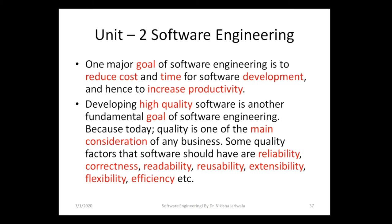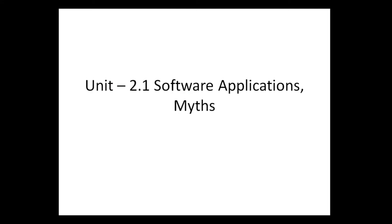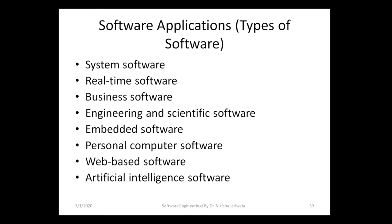In Unit 2 we have some topics. First we saw some general things related to software engineering, and after that we started with topic 2.1 — software applications and myths. Within that, the first topic was software applications, also known as types of software or classification of software. The various types include system software, real-time software, business software, engineering and scientific software, embedded software, personal computer software, web-based software, and artificial intelligence software.